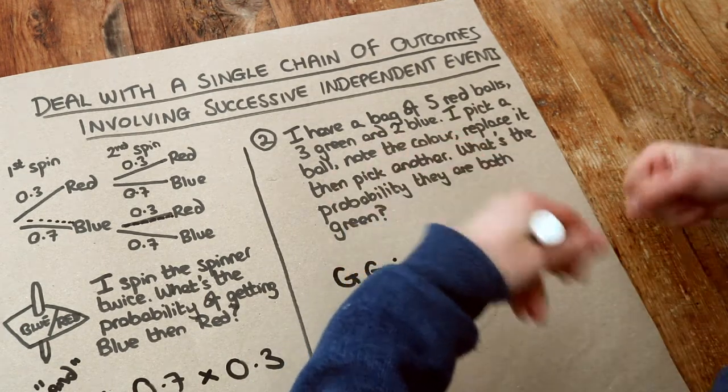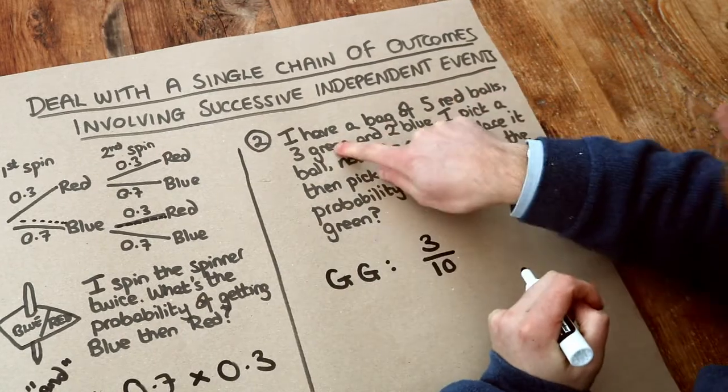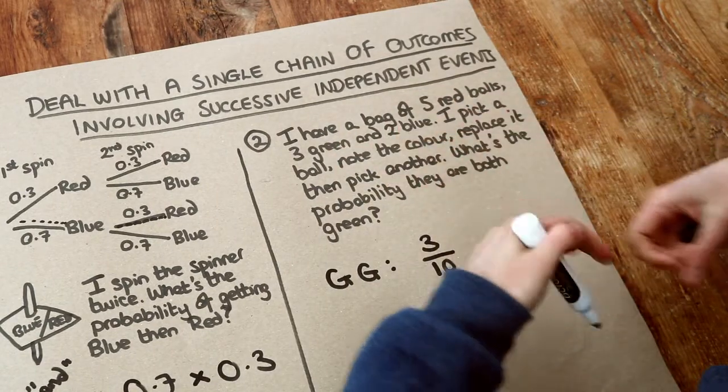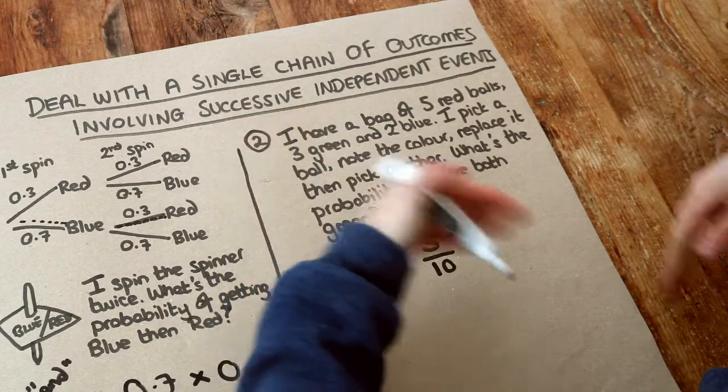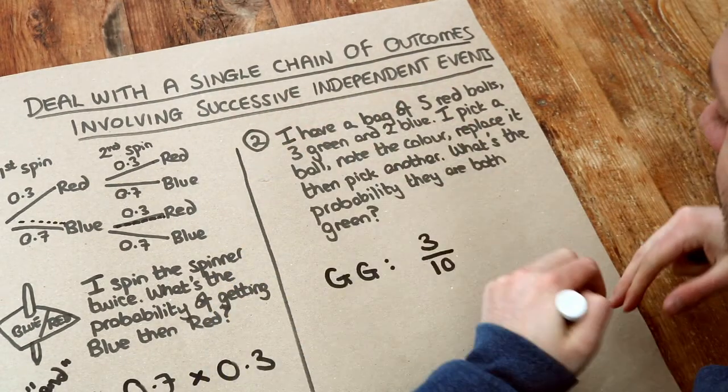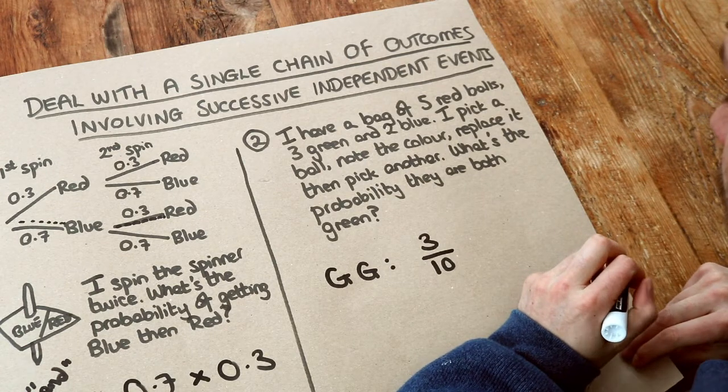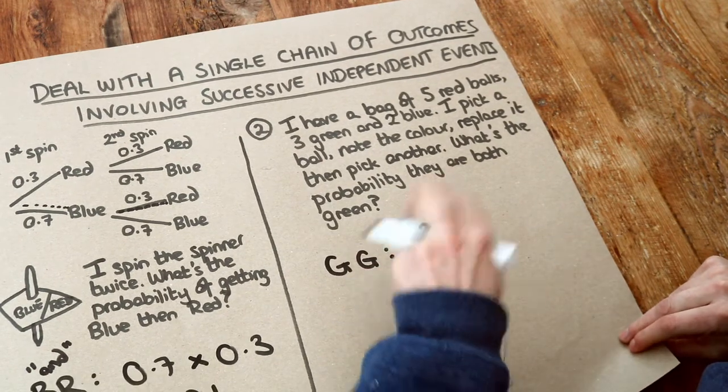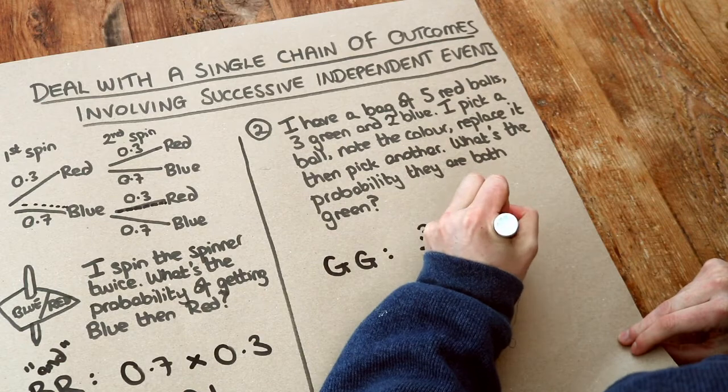Now I put it back. So we've still got five red balls, three green, and two blue in the bag. So the probabilities are still going to be the same of getting red or getting green or getting blue. So the probability of getting red, green, and blue is going to be unchanged from the first pick. So what's the probability of getting green on the second pick? Well it's still going to be three tenths. It's not going to change.